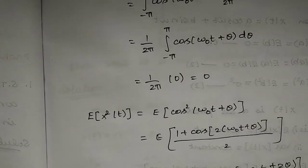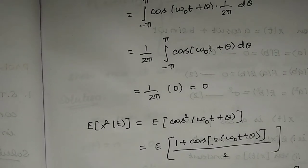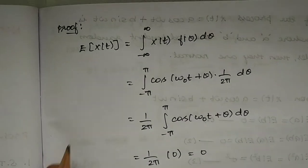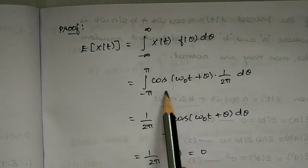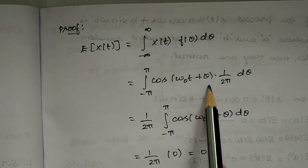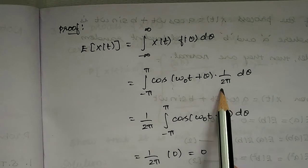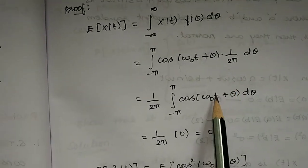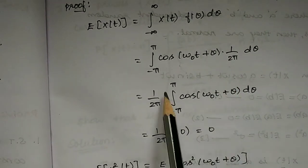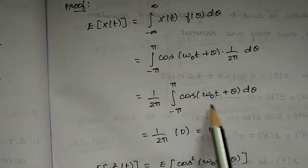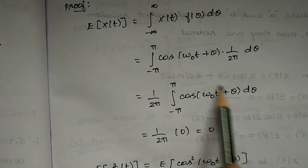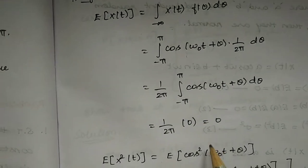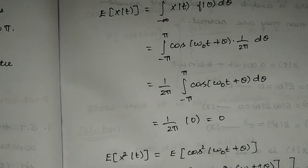Now how do we prove it? E[x(t)] is calculated using the formula: integrate cos(ω₀t + θ) times f(θ) = 1/2π over dθ. This term comes out to 0. So simply the mean value is 0.